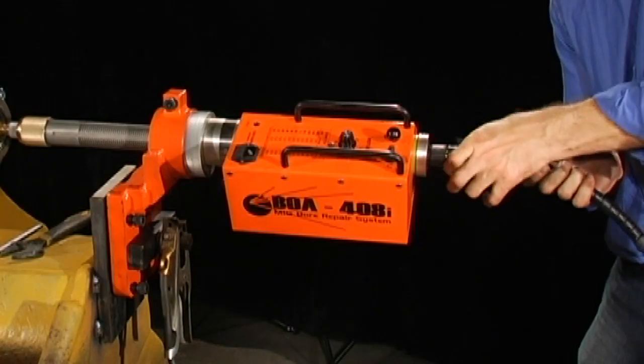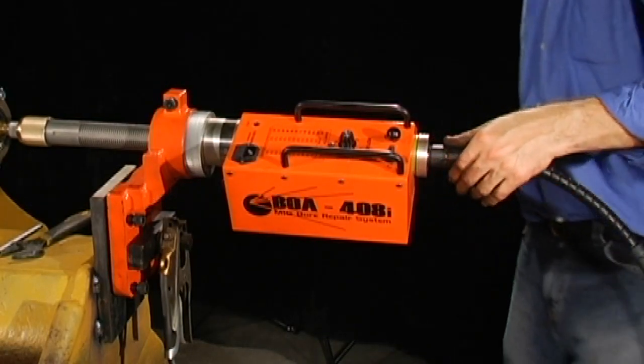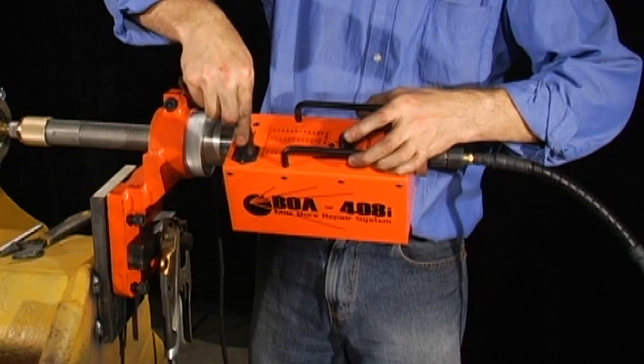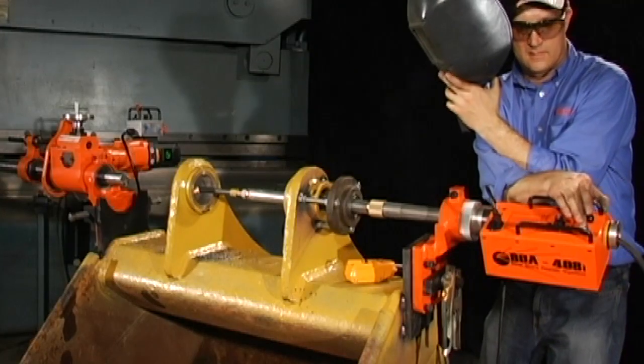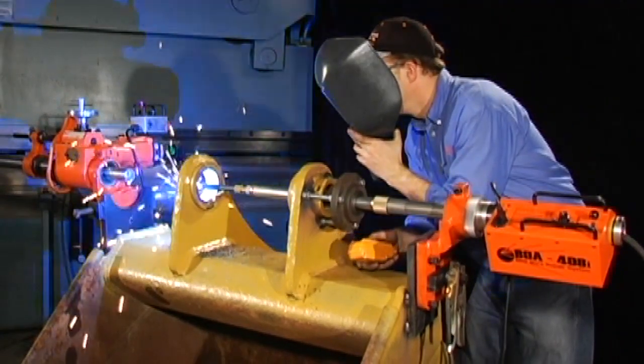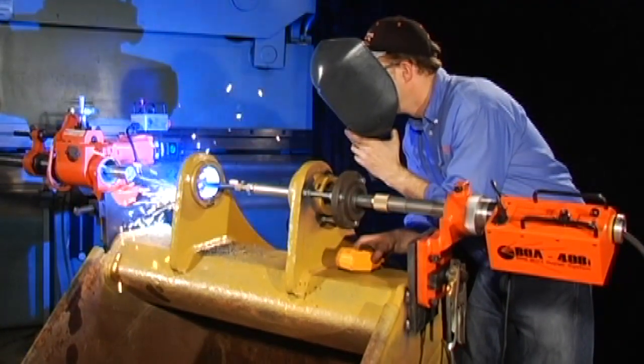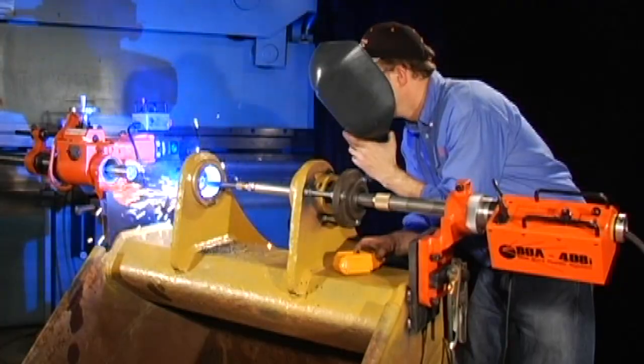Connect the conduit weld pendant into the torch tube and plug in the AC power cord. You're ready to weld. Turn on the 408i and hit start on the weld pendant, then watch as bore repair system's BOA 408i lays down a consistently even, high quality weld surface.